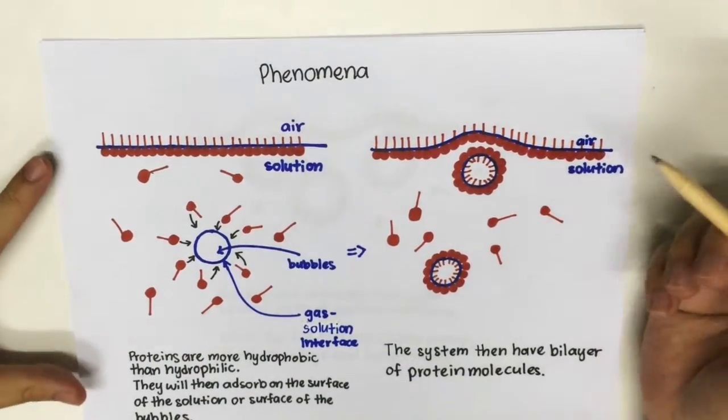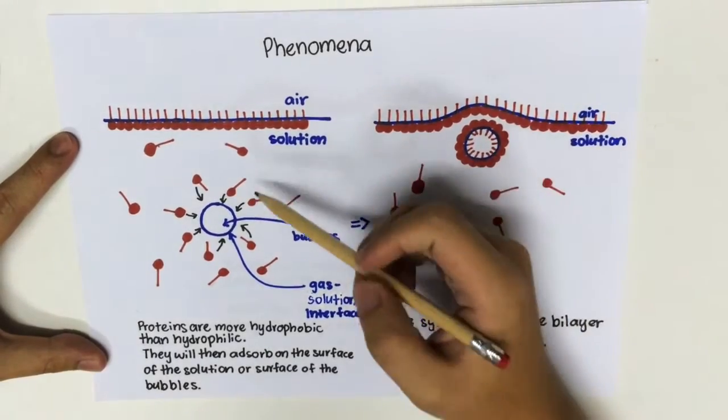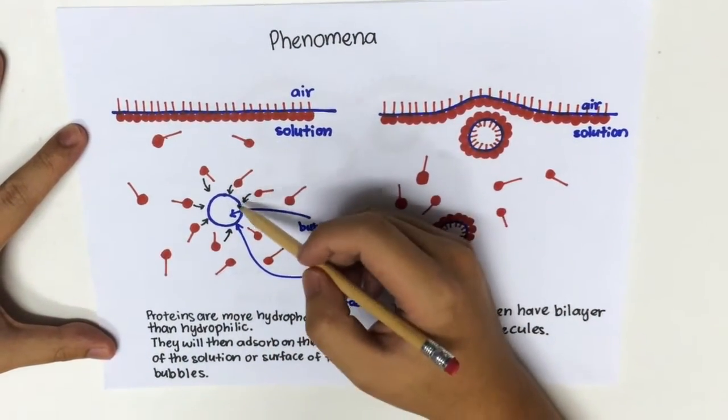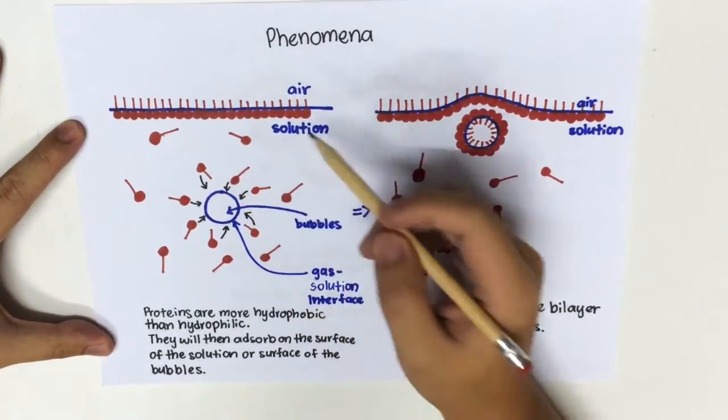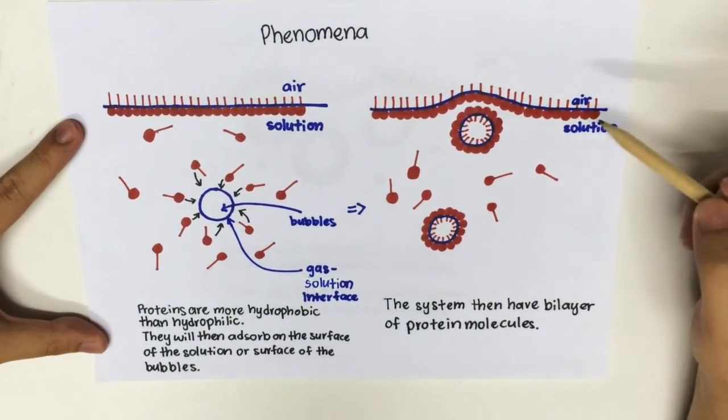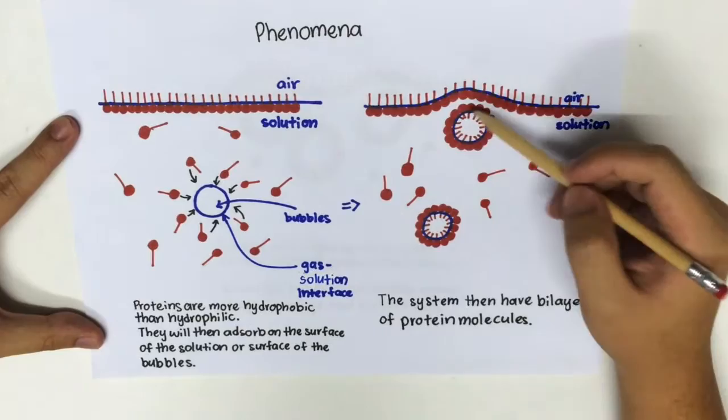Basically, protein molecules are more hydrophobic than hydrophilic, so they tend to attract to the air solution interface or the gas solution interface and absorb on it to form a monolayer of protein molecules. This is what happens after a time where the system has two layers of protein molecules, one here and one here.